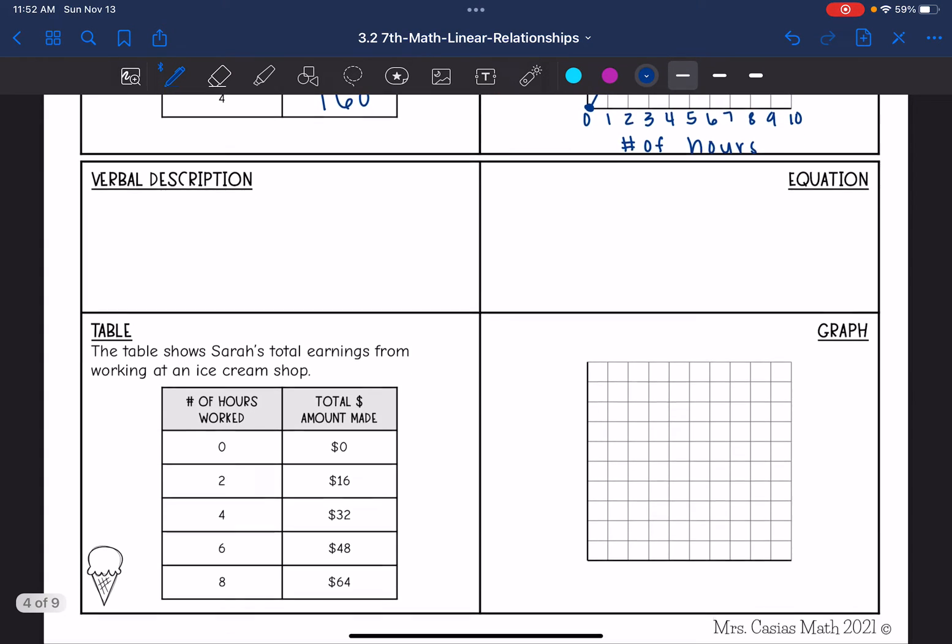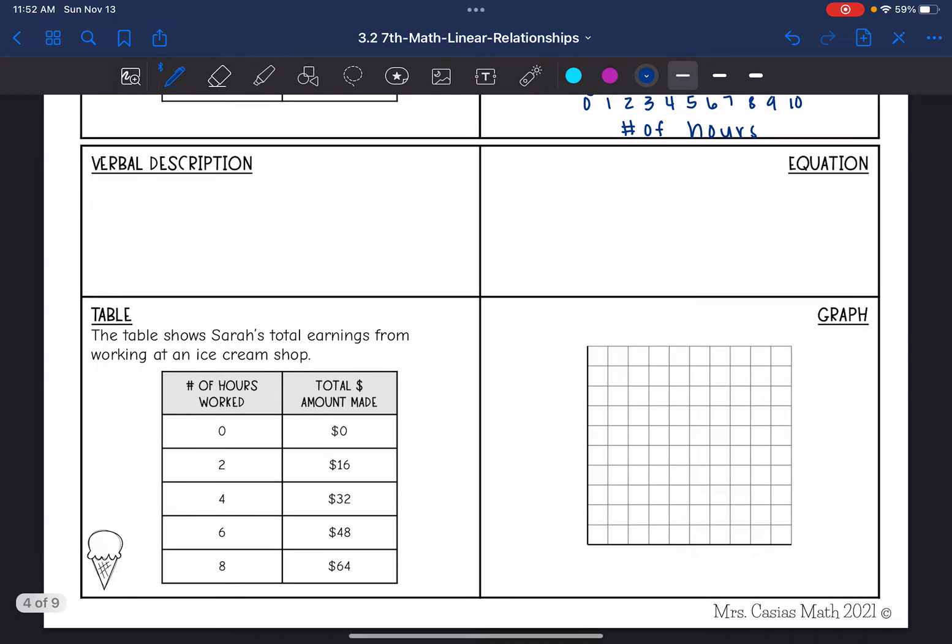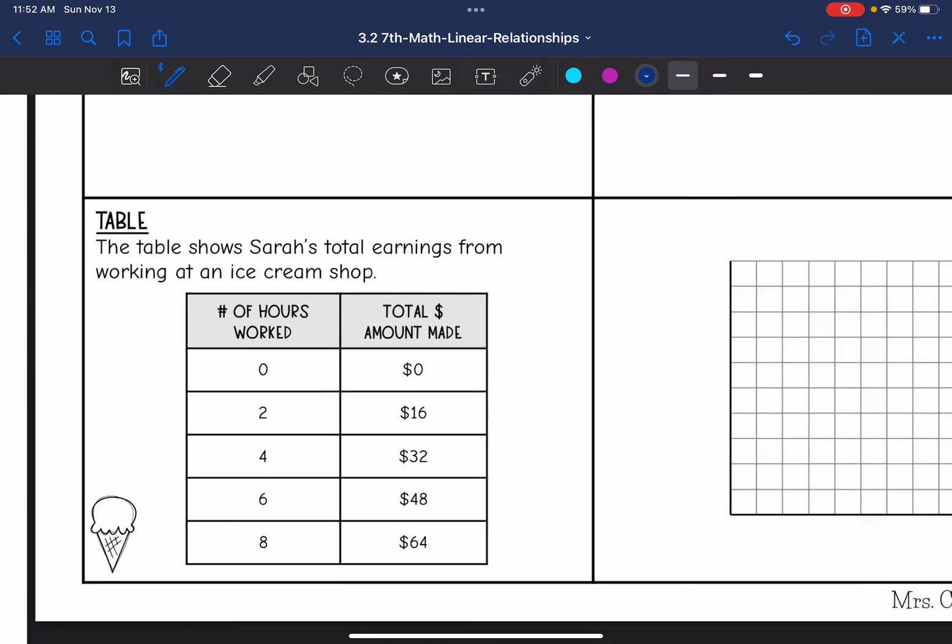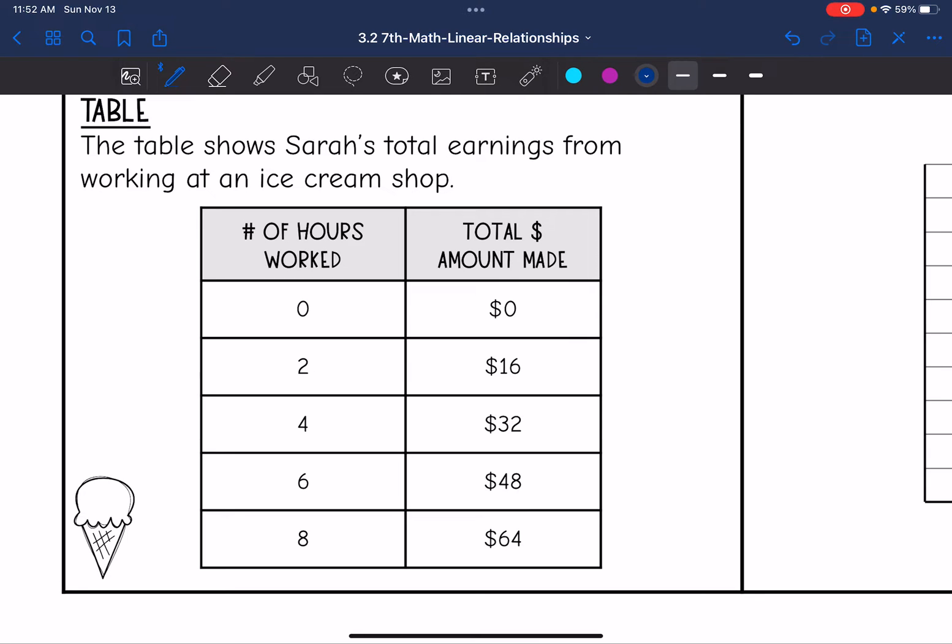Okay, let's look at this second representation. They gave us a table and want us to fill out the verbal description, equation, and graph. So let's look at the table and then maybe we can find the rate of change or that constant of proportionality. It says the table shows Sarah's total earnings from working at an ice cream shop. So in zero hours, she made $0. So because of this 0, 0 point, I know this is going to be a proportional relationship. So that means I can do y divided by x to find the constant of proportionality.